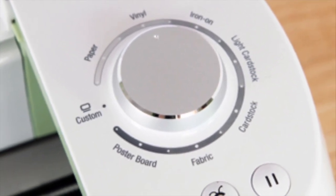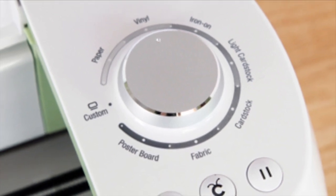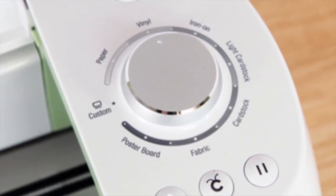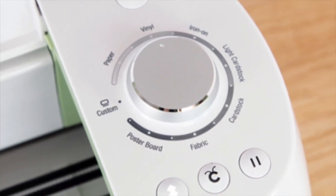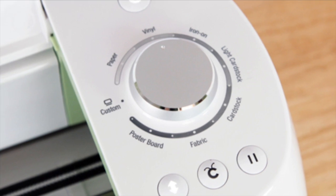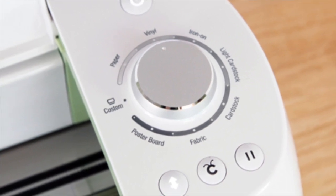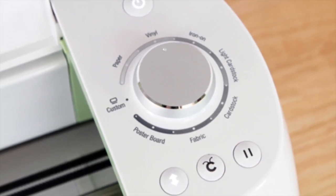You set it to whatever you're working with—vinyl, iron on, card stock—and the machine does it for you. You put your mat in and it cuts it. No longer do we have to worry about pressure, speed, anything else. It cuts it perfect every time.